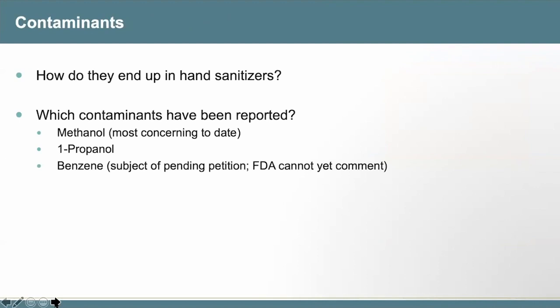In terms of answering the mother's other question about contaminants — how do contaminants end up in hand sanitizers, and which ones have been reported in social media and mainstream media? The most alarming one reported to poison centers is methanol. There have been serious poisonings with methanol being substituted for ethanol or contaminating ethanol. There are also case reports of 1-propanol, as opposed to 2-propanol, which is isopropyl alcohol, the other typical ingredient of some hand sanitizers. More recently, benzene has been reported, though FDA cannot yet comment on that specific contaminant as it is the subject of a pending petition.